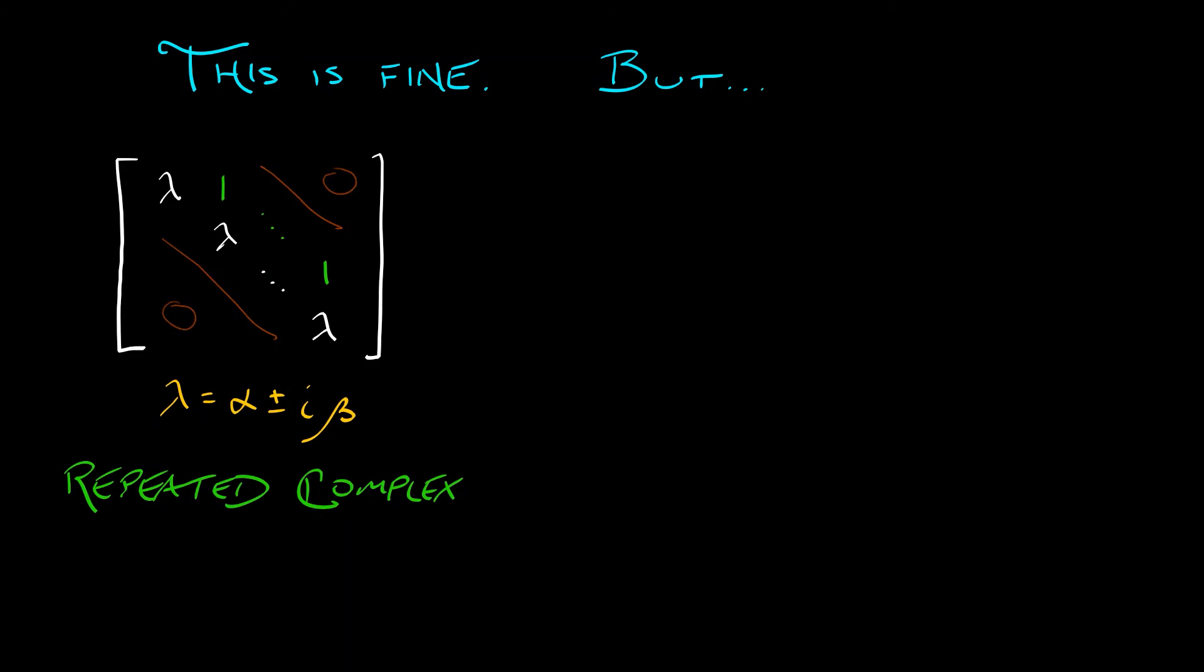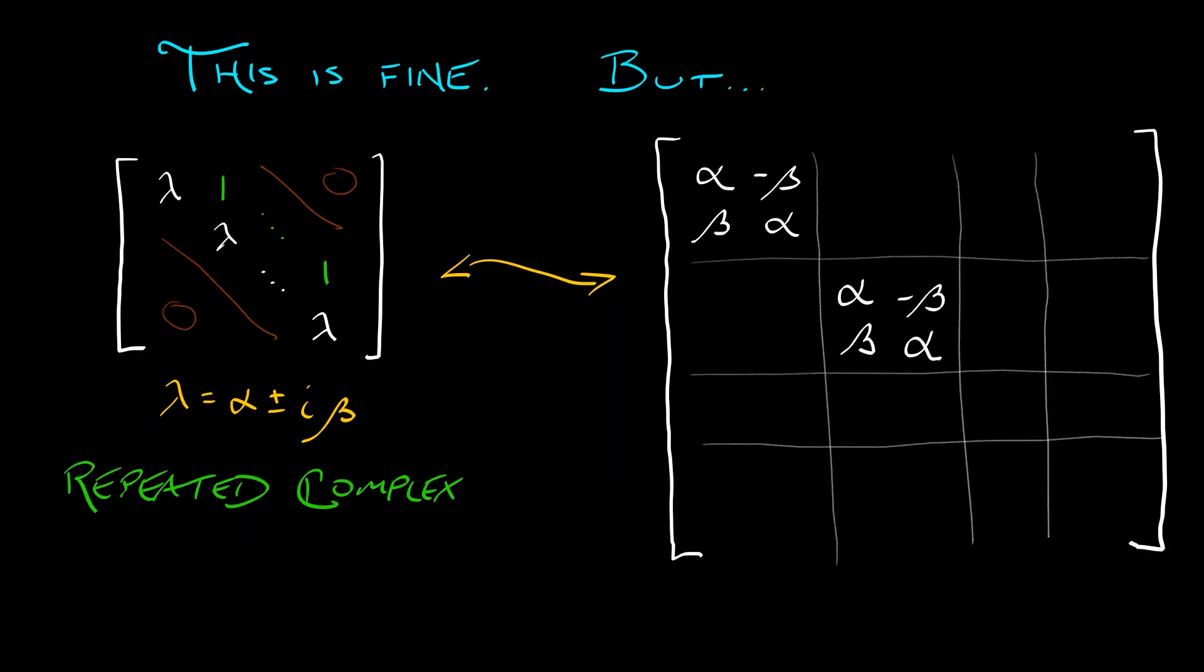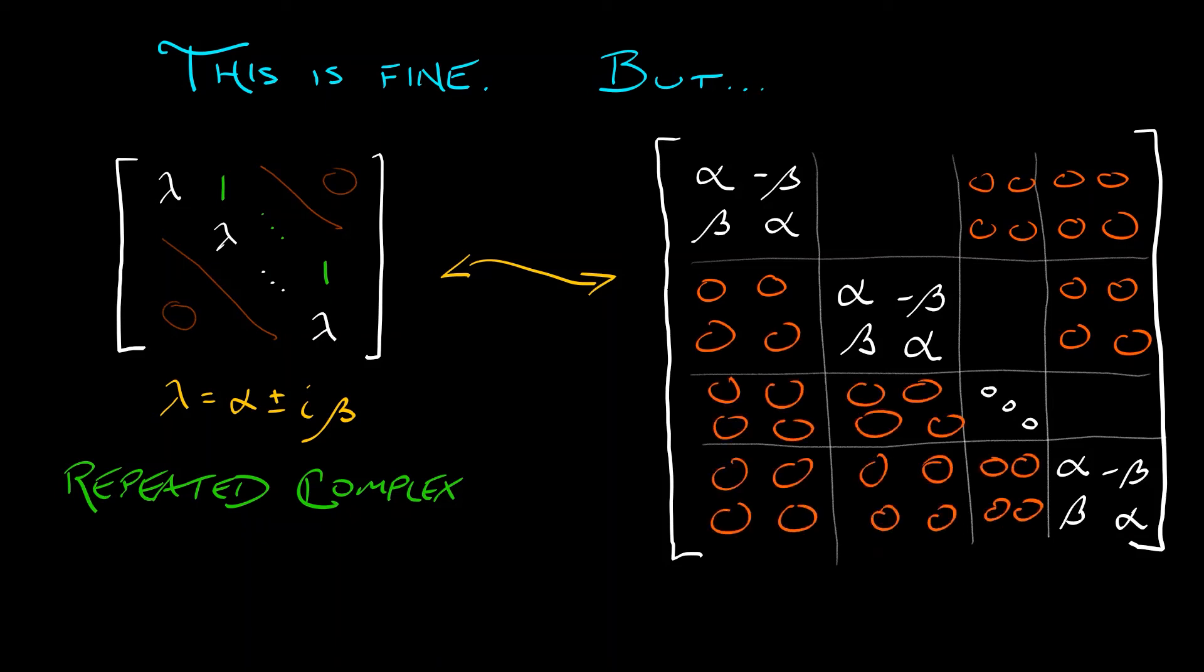Well, we have to, if you will, blow everything up. Every number in this Jordan block has to become a two by two matrix. So we're going to get this big block matrix where along the diagonal blocks, we have alpha beta minus beta alpha. And then off the diagonals, we have zero blocks everywhere, two by two zero blocks everywhere, except for that super diagonal where, instead of ones, what we have are two by two identity block matrices.